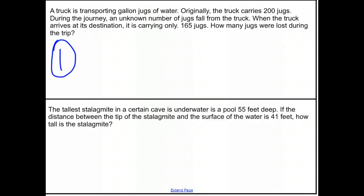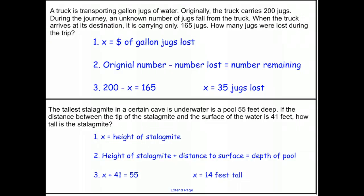So looking at the first one here, truck is transporting gallon jugs of water. Well, at the end, we can see that our question, how many jugs were lost during the trip, means that the number of jugs lost is going to be our variable. In that case, if we look at the question itself, we can see that our original number of jugs, which is 200, minus the number that were lost during transport, have to equal the number of jugs remaining. Now in this case, we know the original number to be 200, we know the number remaining to be 165, but we don't know the number lost. So 200 minus x equals 165, so mental math gives us that we've lost 35 jugs.